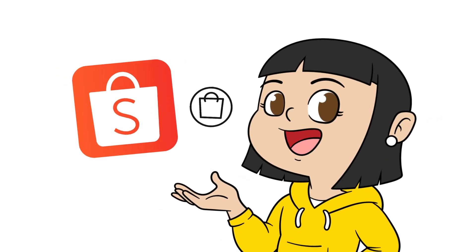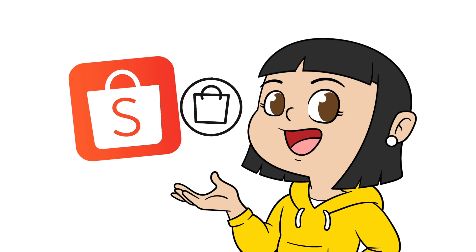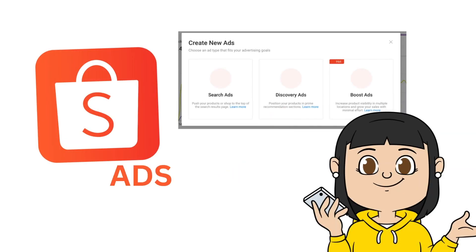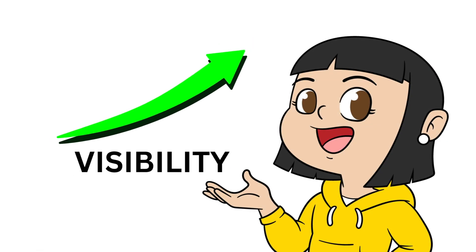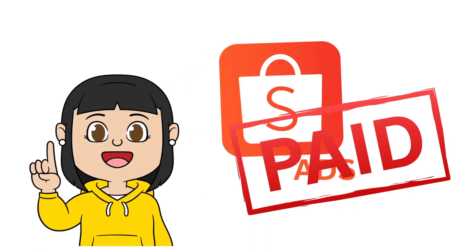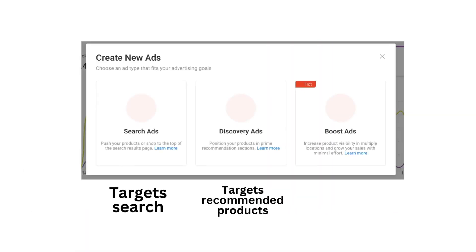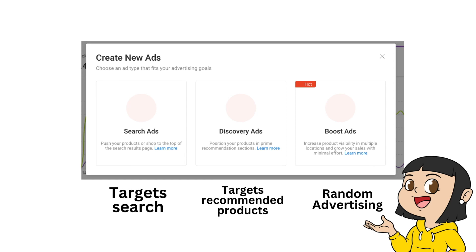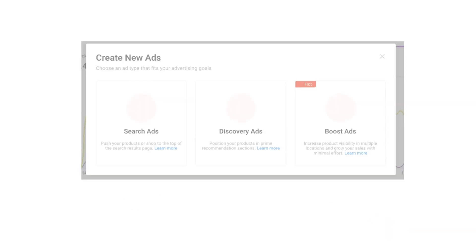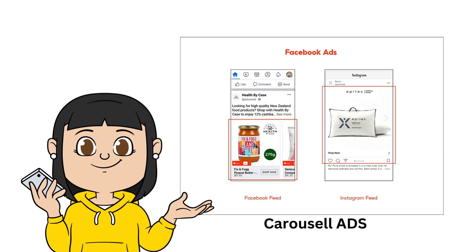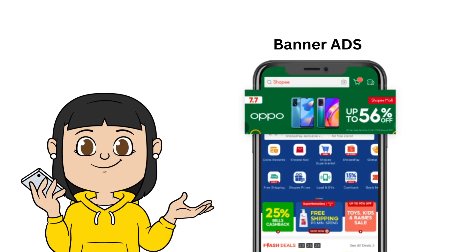One of the marketing strategies I have mentioned in my videos regarding selling in Shopee is Shopee ads. Shopee ads allow sellers to promote products and increase visibility within the Shopee marketplace through paid advertising. Sellers can create and manage ad campaigns, target specific audiences based on demographics, interests, and behavior. Ad formats may include carousel ads, banner ads, and sponsored product placements.